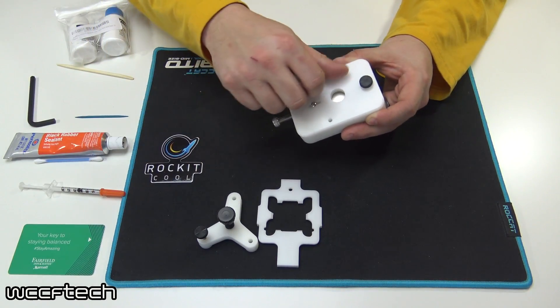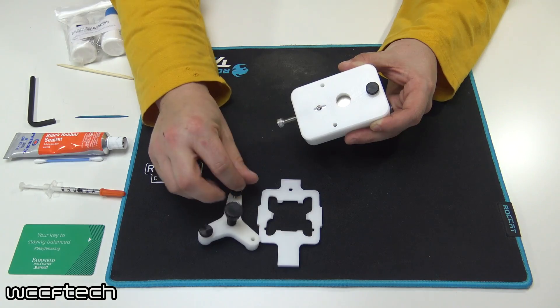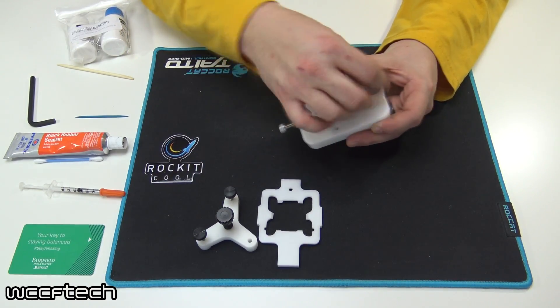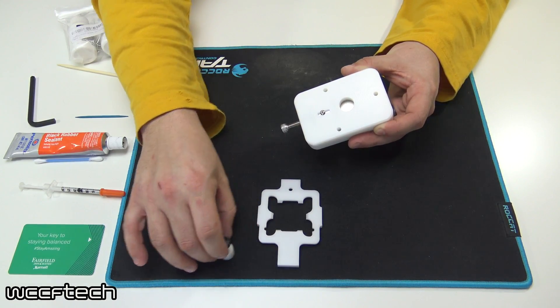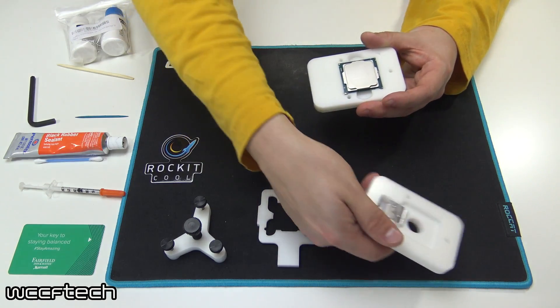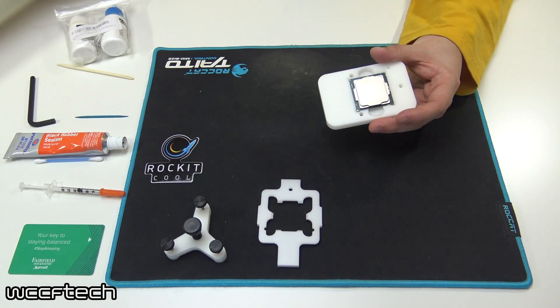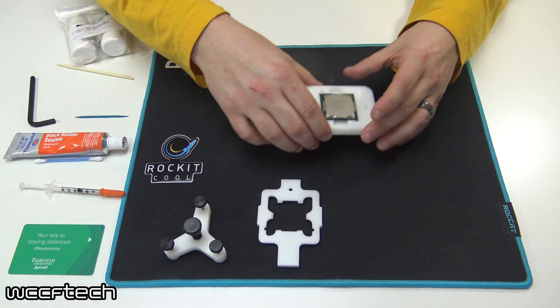So I'm going to go ahead and set those there because that's where we'll use them next for the relid process. Take this part, we actually won't need this anymore, so I'm going to set it over completely to the side.